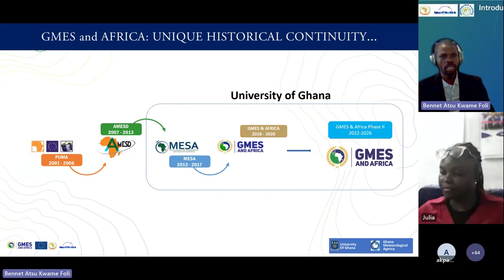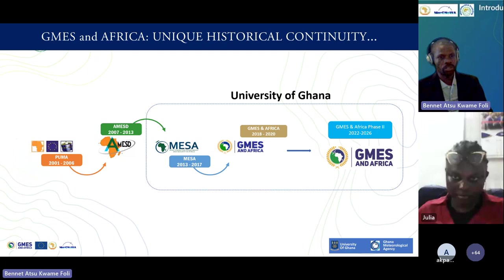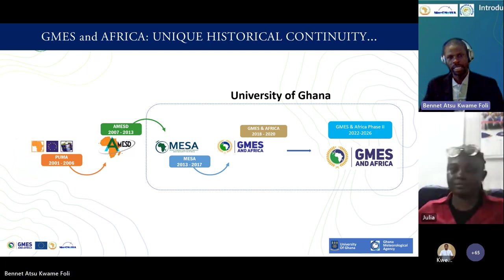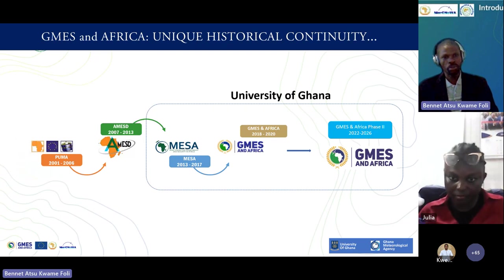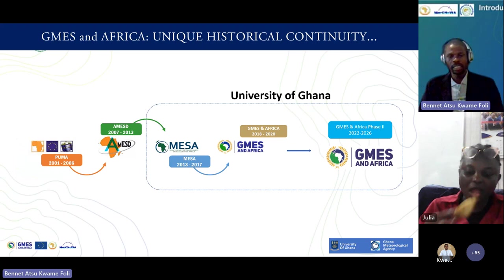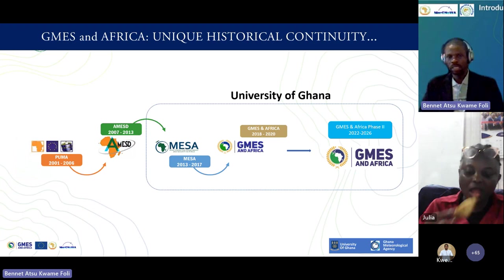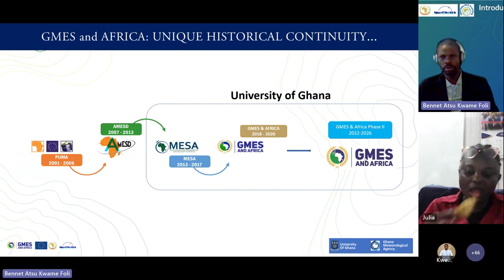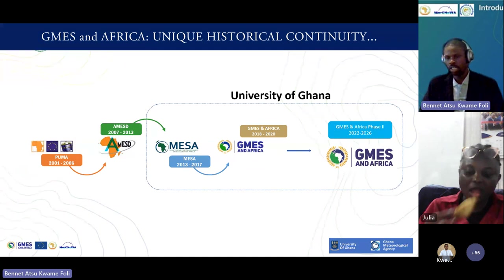Looking at how the program evolved: it started as the PUMA project from 2001 to 2006, then changed into the AMESD program from 2007 to 2013, and then became the MESA project - Monitoring Environment and Security in Africa - from 2013 to 2017, where the University of Ghana started participating. It then moved on to phase one of GMES and Africa project, and now we are in phase two, 2022 to end in 2026.